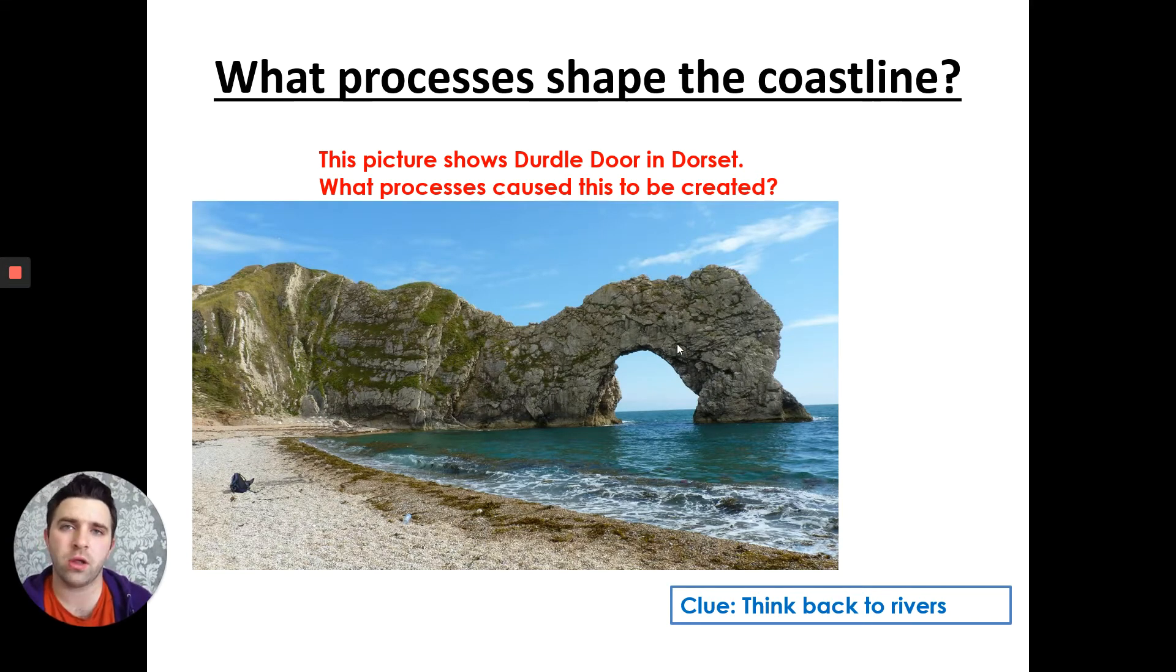Year 10 Geography and we're continuing our look at coasts and coastlines. Last lesson you looked at waves and what exactly they are and how they work. Today we're going to look at what processes shape our coastline. These waves create certain processes. Let's have a quick look at this picture showing this arch. This is actually Durdle Door in Dorset. What has caused this one solid piece of rock sticking out into the sea to have this big arch shaped hole in it, and how has this bay or cove been made? The clue is to think back to rivers.